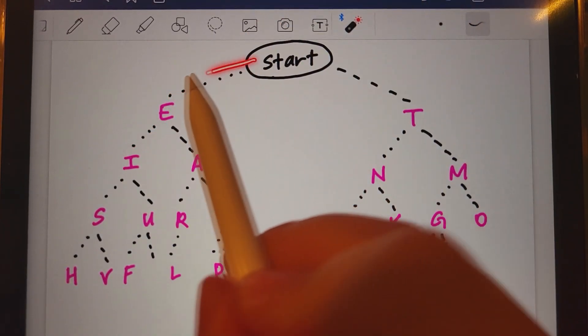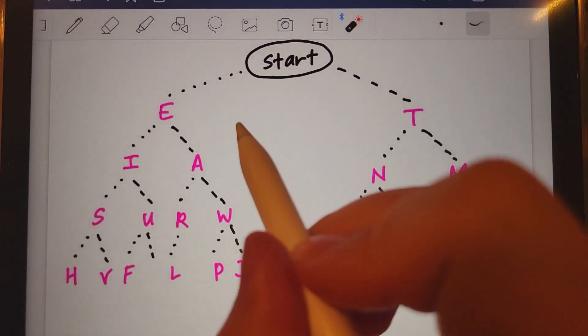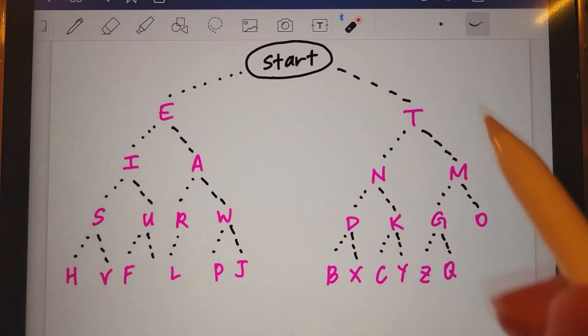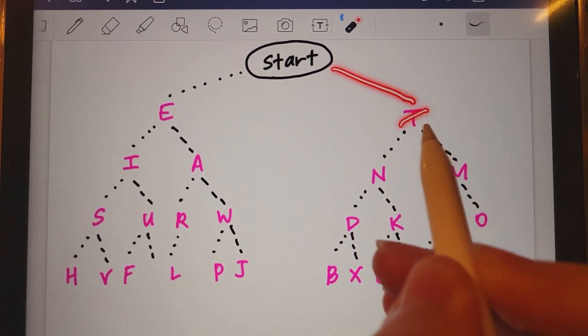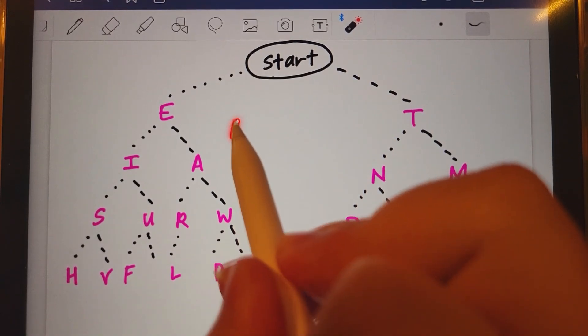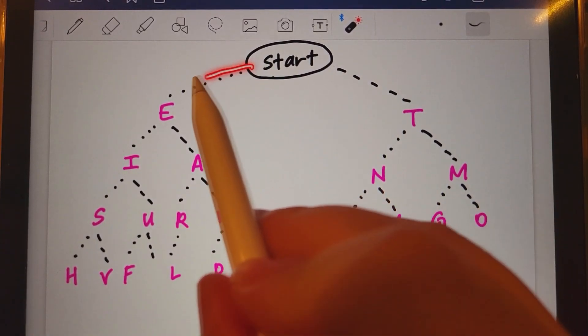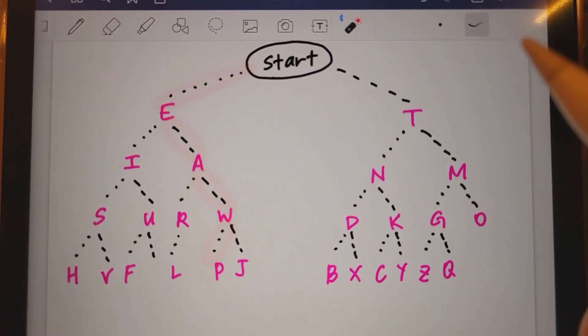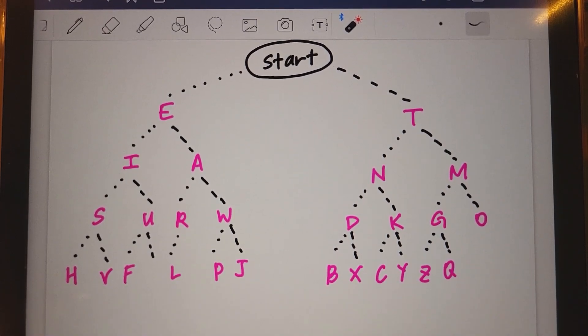Pretty easy, right? Let's try M. Dash, dash. So M is dash, dash, two dashes. Great. Now P, a little more advanced. Dot, dash, dash, dot. So P is dot, dash, dash, dot. Great.